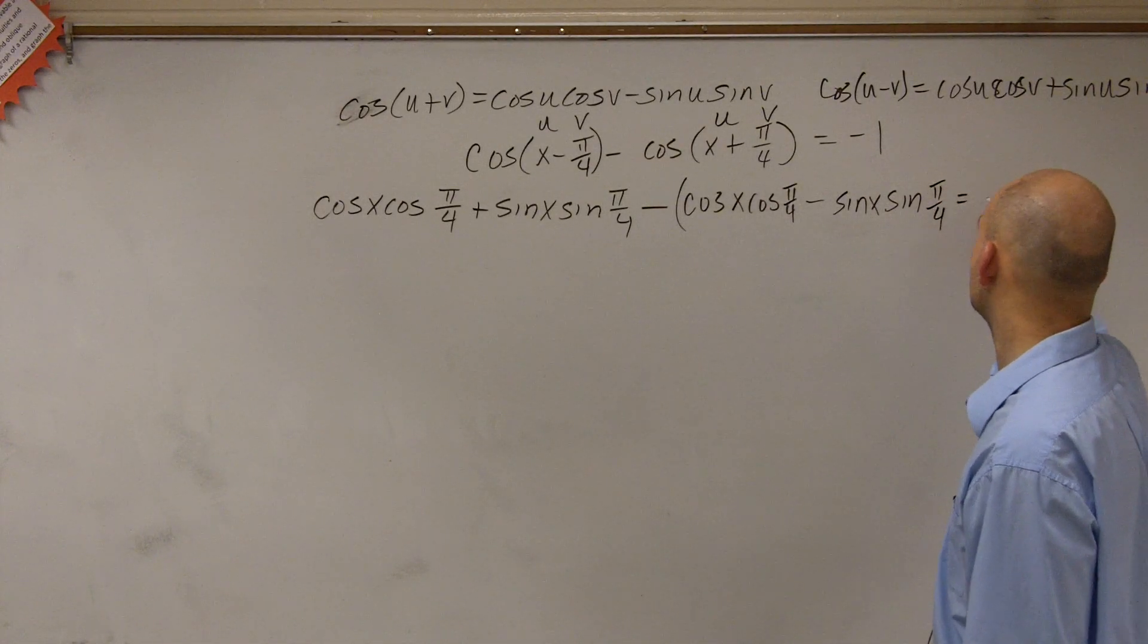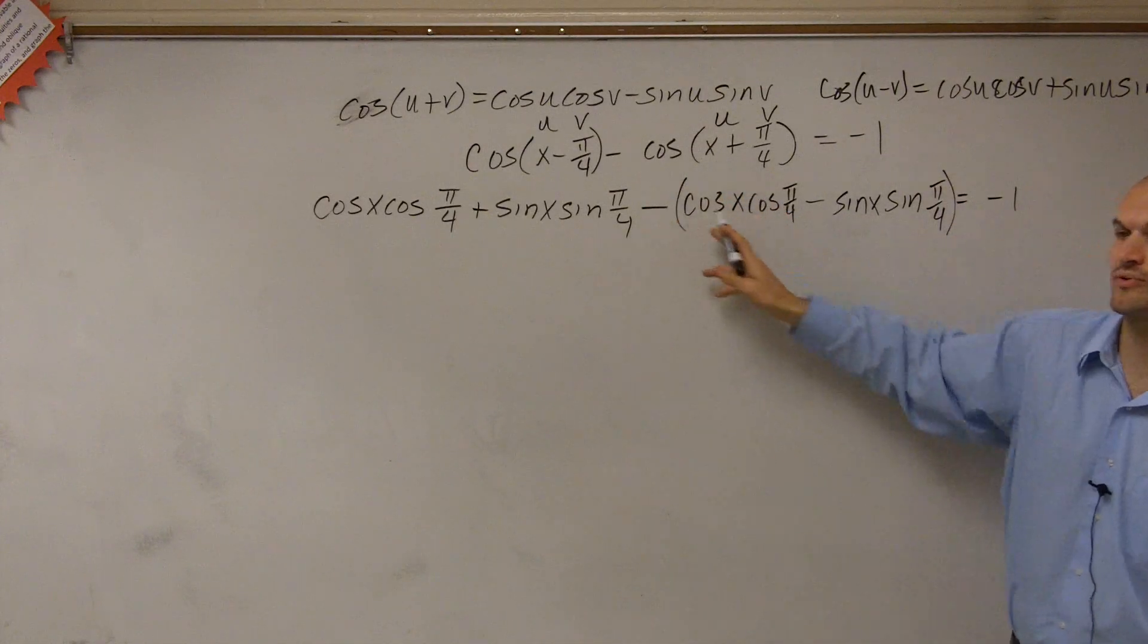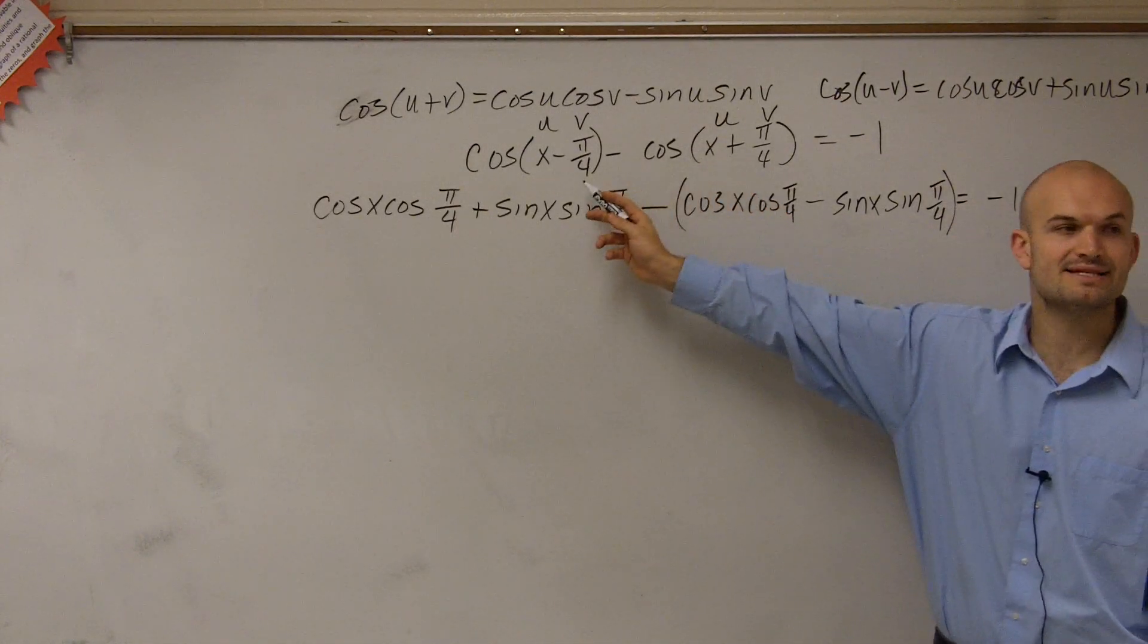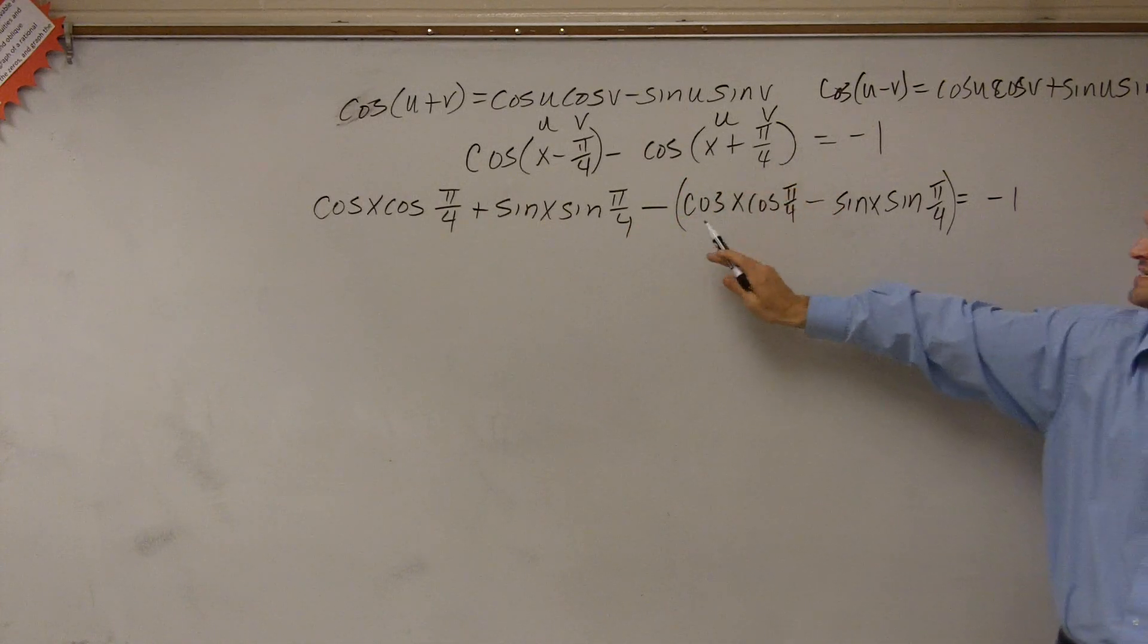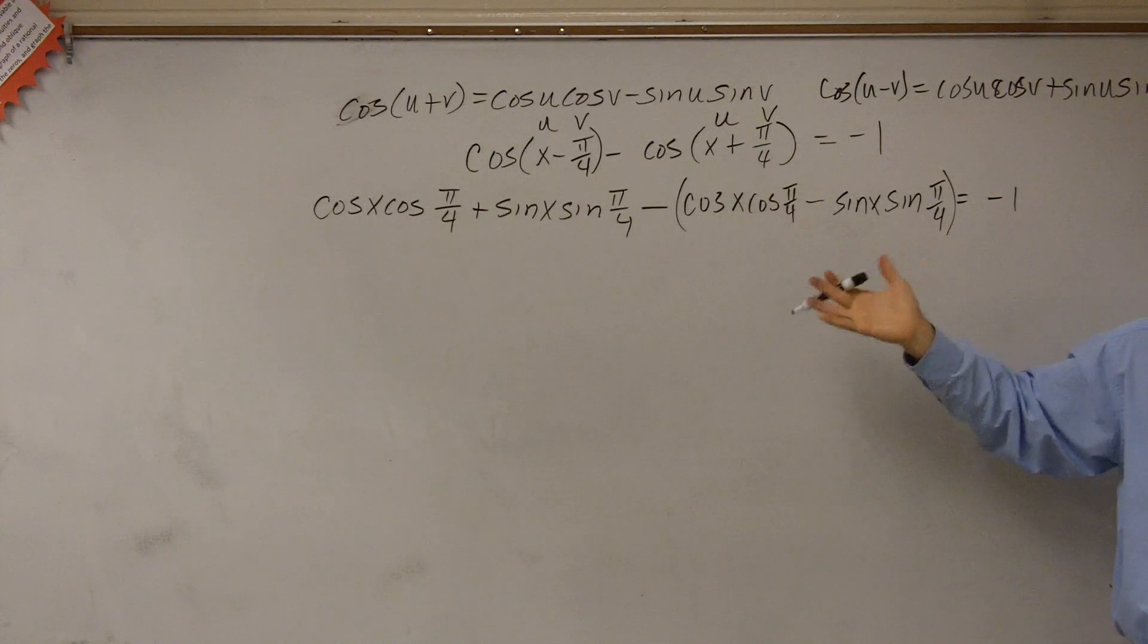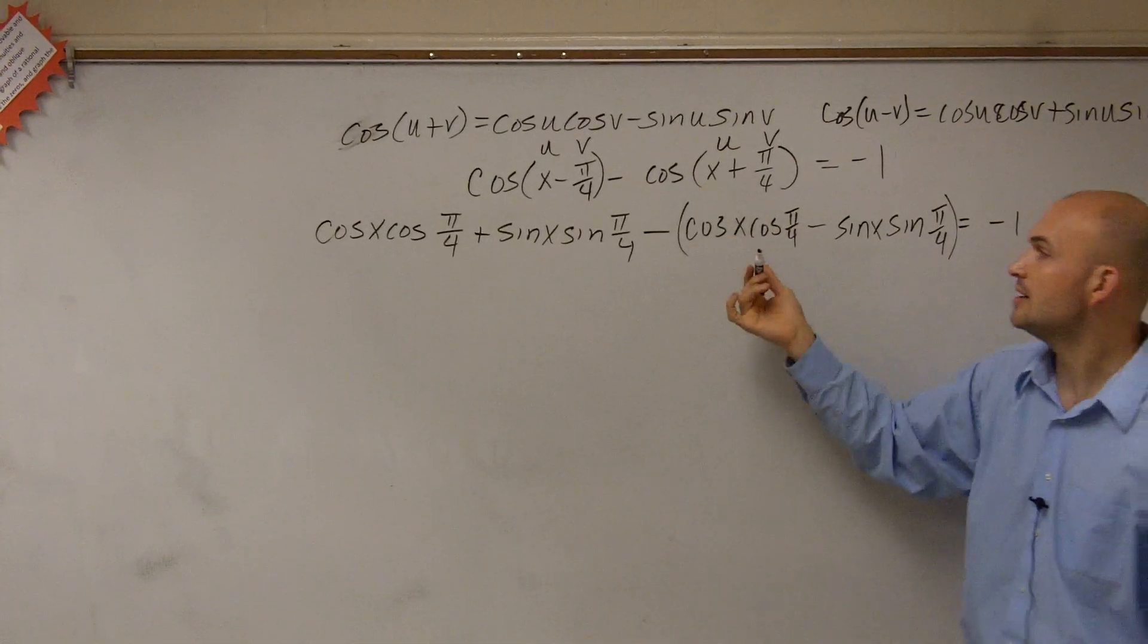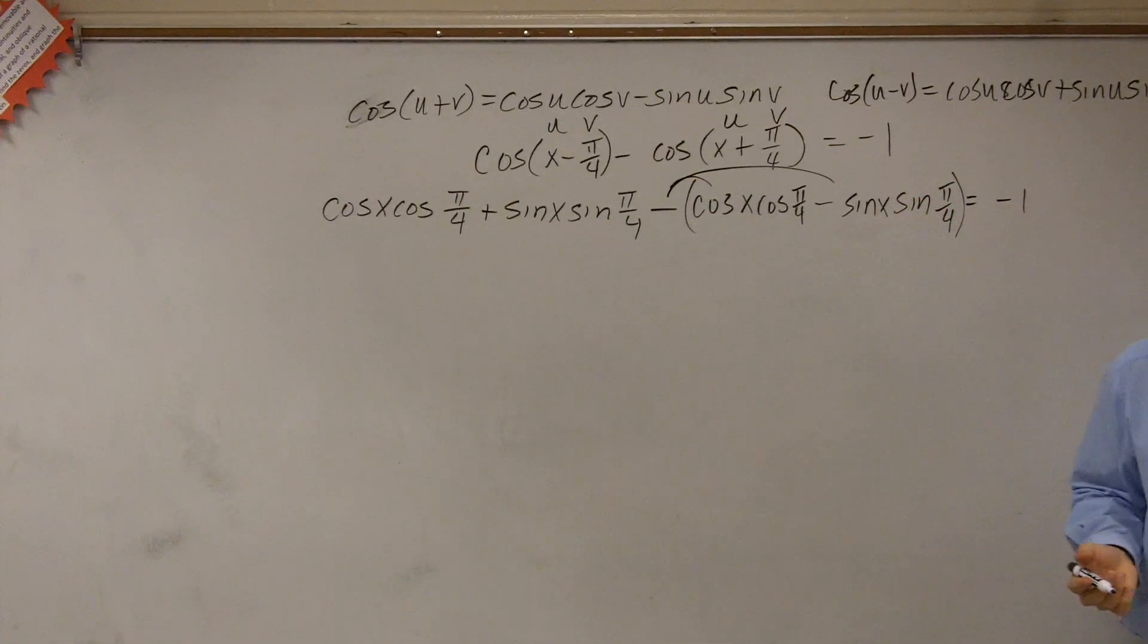And that all has to equal negative 1. Now notice how I put this in parentheses, right? Because you're minusing the cosine of this. Well, cosine of x plus pi over 4 equals all of this. So we've got to make sure we put this in parentheses. Now to get rid of the parentheses, what we can do is we can apply our subtraction sign to both of them.